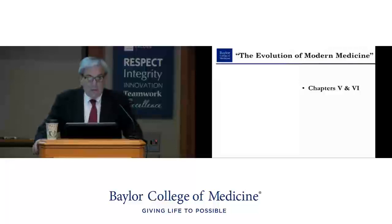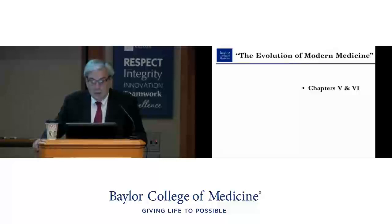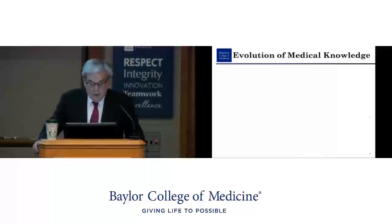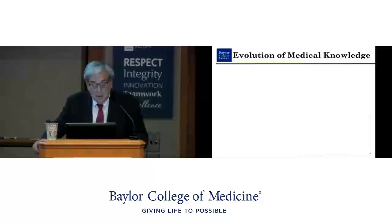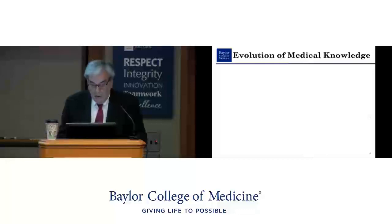Where we left the discussion at the end of part one was through chapters one through four of The Evolution of Modern Medicine, which was based on the Silliman lectures given by Osler at Yale in 1913 and eventually published in 1921. Today we're going to finish the last two chapters, five and six, and continue with discussion of what took place in the 20th century. This schematic of medical knowledge covers about 2,000 to 3,000 years of history, from early antiquity to the scientific revolution and the end of the Renaissance.